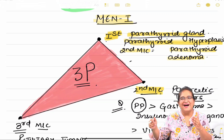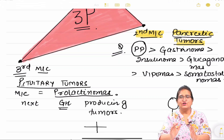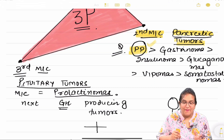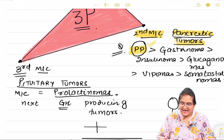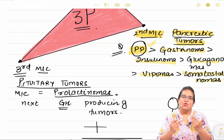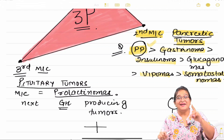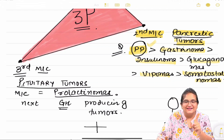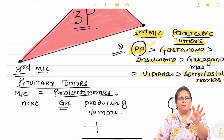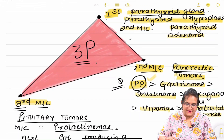The triangle has a shorter arm, representing the second most common site which is pancreatic tumors. In pancreatic tumors, the most common tumor to occur is of pancreatic polypeptide. The order is very important: first most common in pancreas is pancreatic polypeptide, then gastrinoma, then insulinoma, then glucagonoma, then VIPomas, and then somatostatinoma. Second most common site overall is pancreatic.